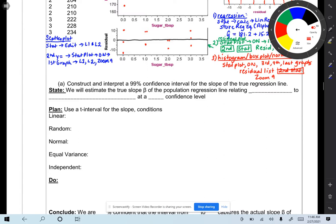So construct and interpret a 99% confidence interval for the slope of the true regression line. For the state portion, we'll estimate the true slope beta of the population regression line relating flower freshness to sugar amount at a 99% confidence level.